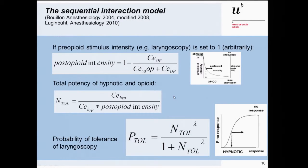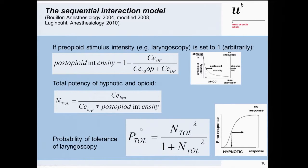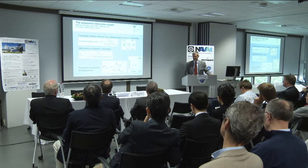Here is the mathematics behind. The general formula is the hill curve with the slope parameter, and with the total potency of the combination of an opioid and a hypnotic, which equals the probability of tolerance of a certain stimulus — in our case mostly laryngoscopy, but it may also be skin incision.